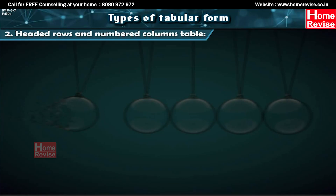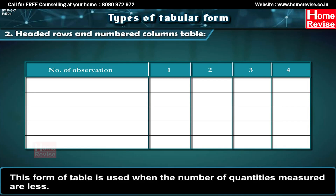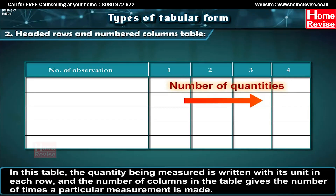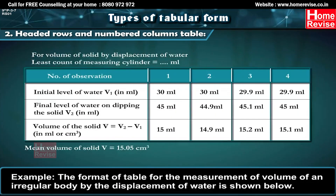Headed rows and numbered columns table: This form of table is used when the number of quantities measured are less. In this table, the quantity being measured is written with its unit in each row, and the number of columns gives the number of times a particular measurement is made. Example: The format of a table for the measurement of volume of an irregular body by the displacement of water.